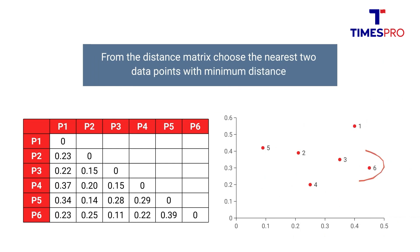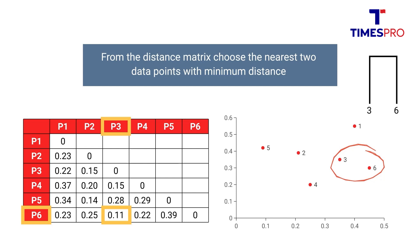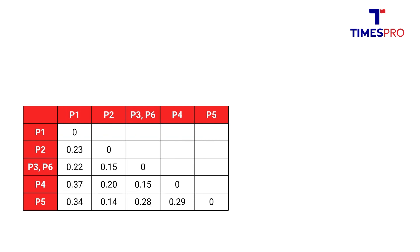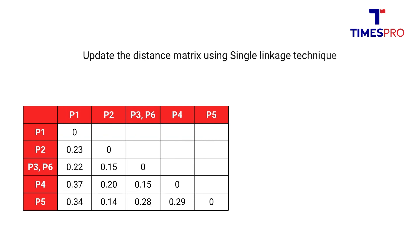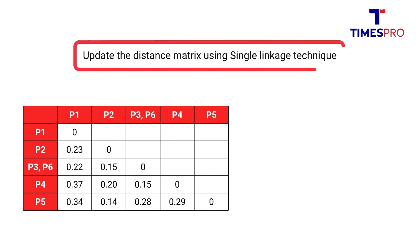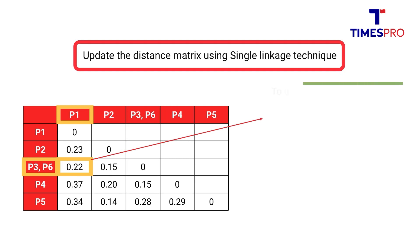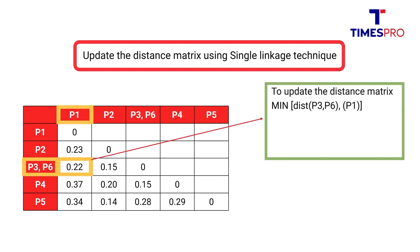From the distance matrix, we choose the nearest two data points with minimum distance. If you observe the distance matrix, the nearest two data points with the least distance are P6 and P3. We combine these two data points to form one cluster. We next need to update the distance matrix using single linkage technique. We compute the distance between cluster P3-P6 and data point P1, which comes to 0.22 — the minimum of distances P3-P1 and P6-P1.